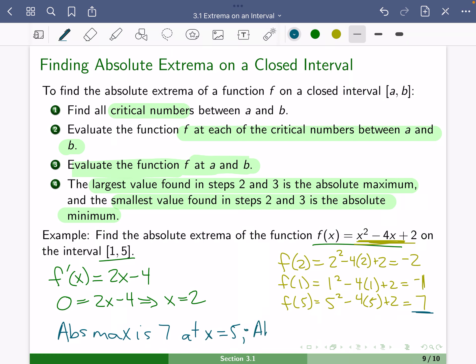The absolute min is -2. And it occurs at x equals 2. We have found our absolute maximum and minimum.